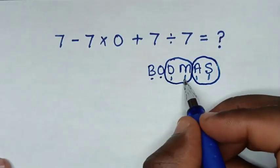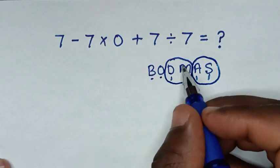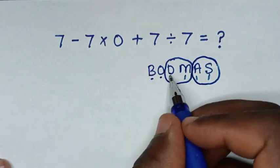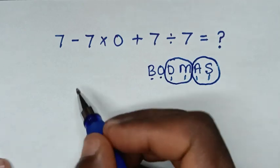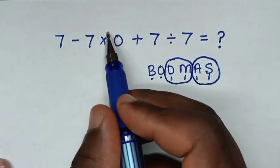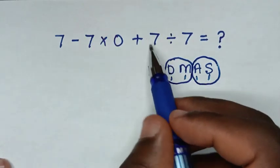From the group of division and multiplication, we deal with whichever comes first. In this problem, multiplication starts first, then we deal with division.